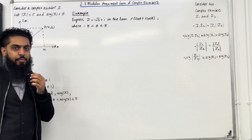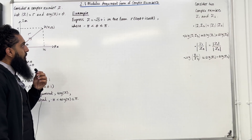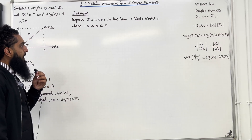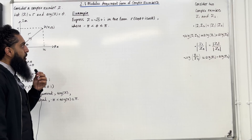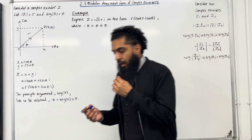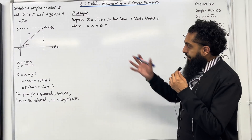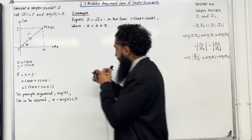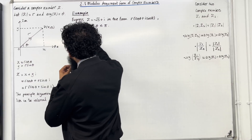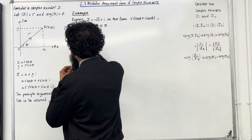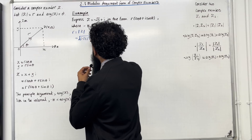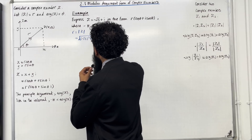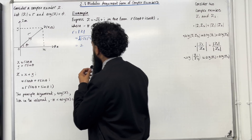Let's look at this example. Express z = −√3 + i in the form r(cos θ + i sin θ), where −π < θ ≤ π. To find r, we take the modulus of z: r = √((−√3)² + 1²) = √(3 + 1) = 2.